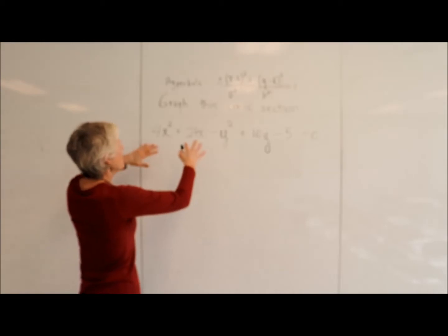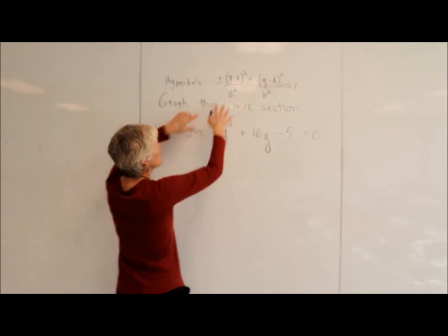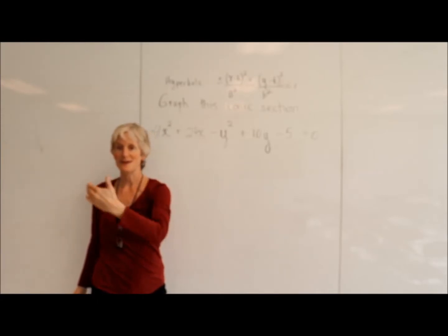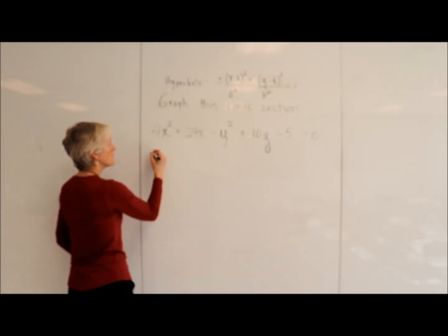All right, if I want to change this to look like this, I'm going to do the process called completing the square. If you recall, that process works best if you have a coefficient of 1.